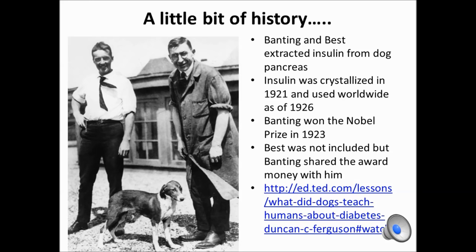Insulin was used for the first time for the treatment of diabetes in 1921 by Banting and Best. Banting won the Nobel Prize in 1923 for this discovery that insulin could be used for the treatment of diabetes. The insulin they used was an extracted insulin from dog pancreas. I encourage you to watch the video listed at the end of the slide, which goes over the history of diabetes and the use of insulin for the treatment of this disease.